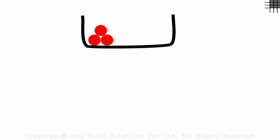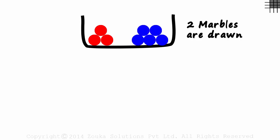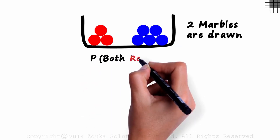This box has three red marbles and five blue ones. Two marbles are drawn at random. Yes, two marbles are drawn from these eight. What is the probability that both of them are red?